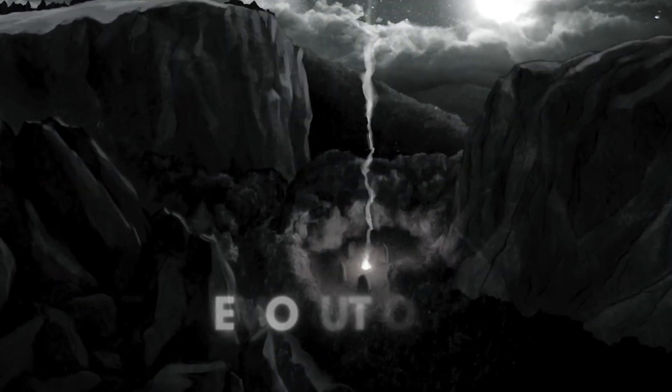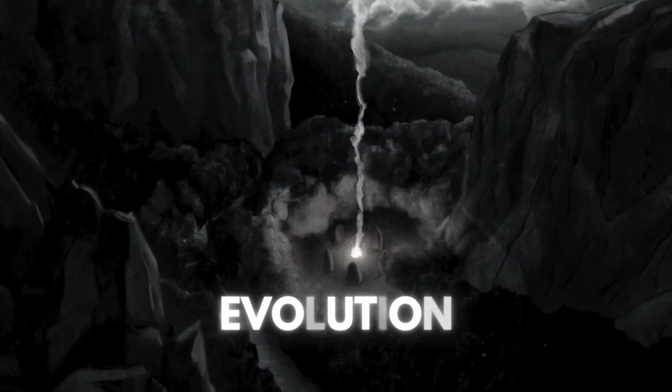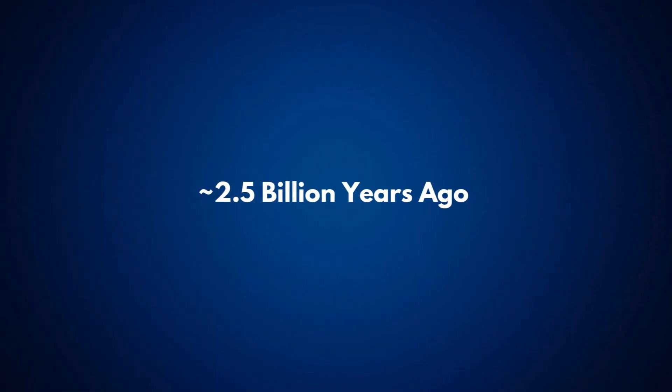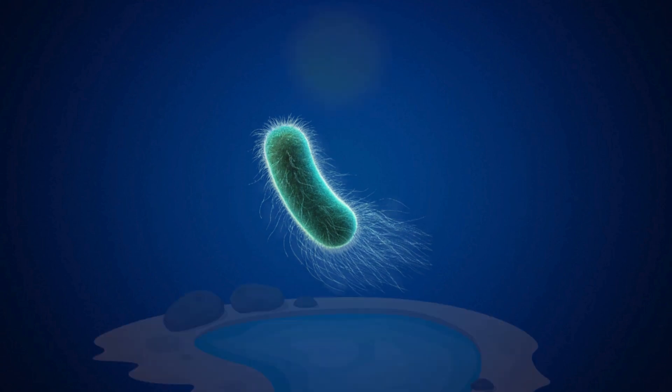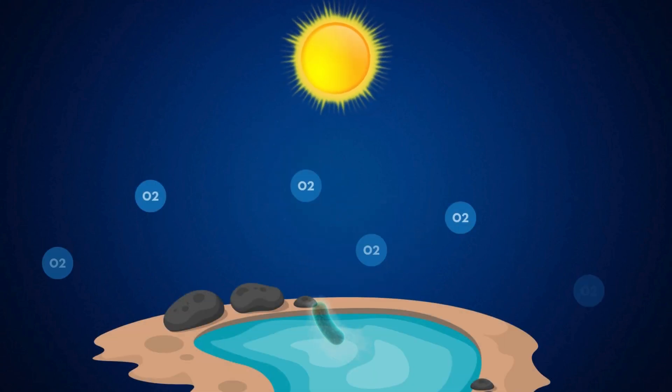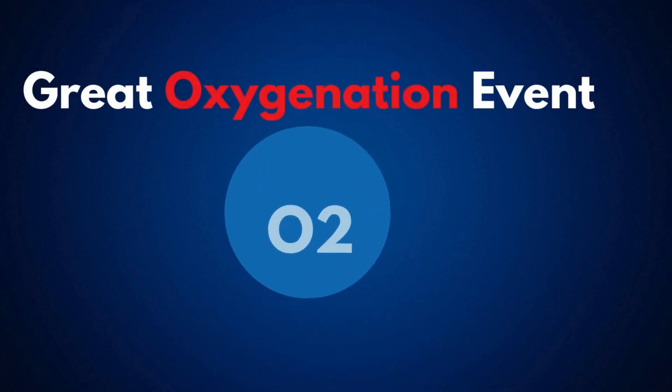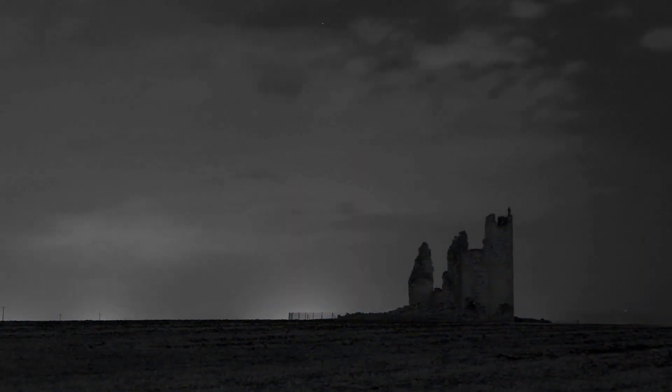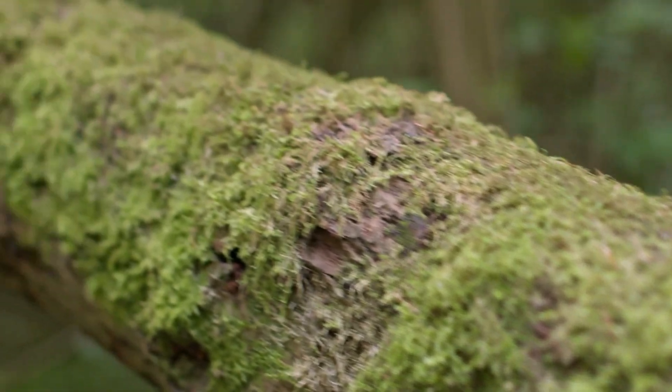Once life emerged, evolution took over. Simple bacteria-like organisms started adapting to different environments. Around 2.5 billion years ago, something revolutionary happened. Cyanobacteria began performing photosynthesis, releasing oxygen into the atmosphere. This triggered the Great Oxygenation Event, transforming Earth's environment and paving the way for more complex life forms.